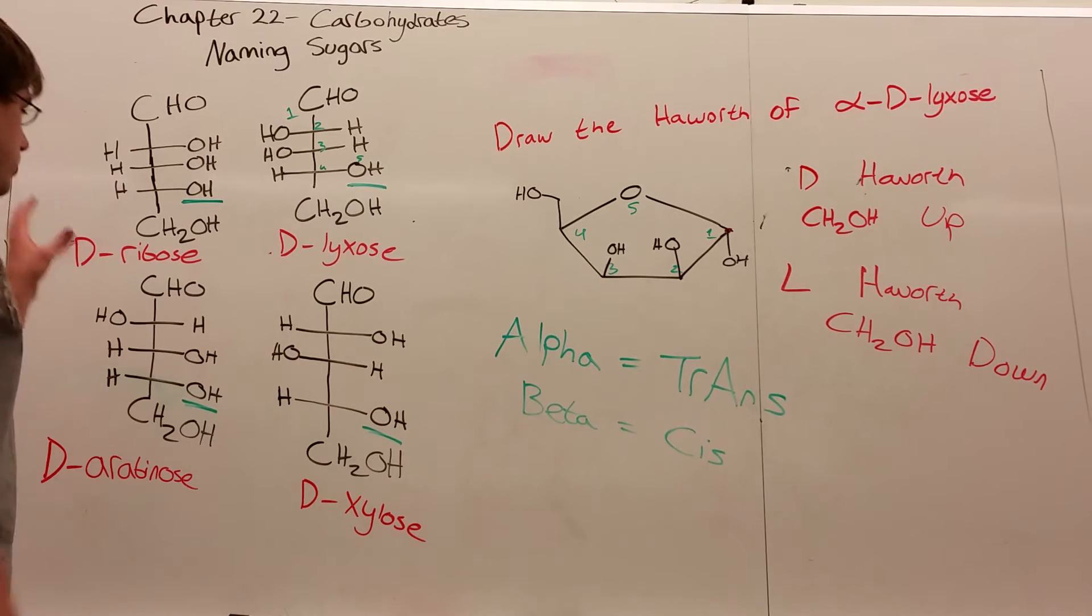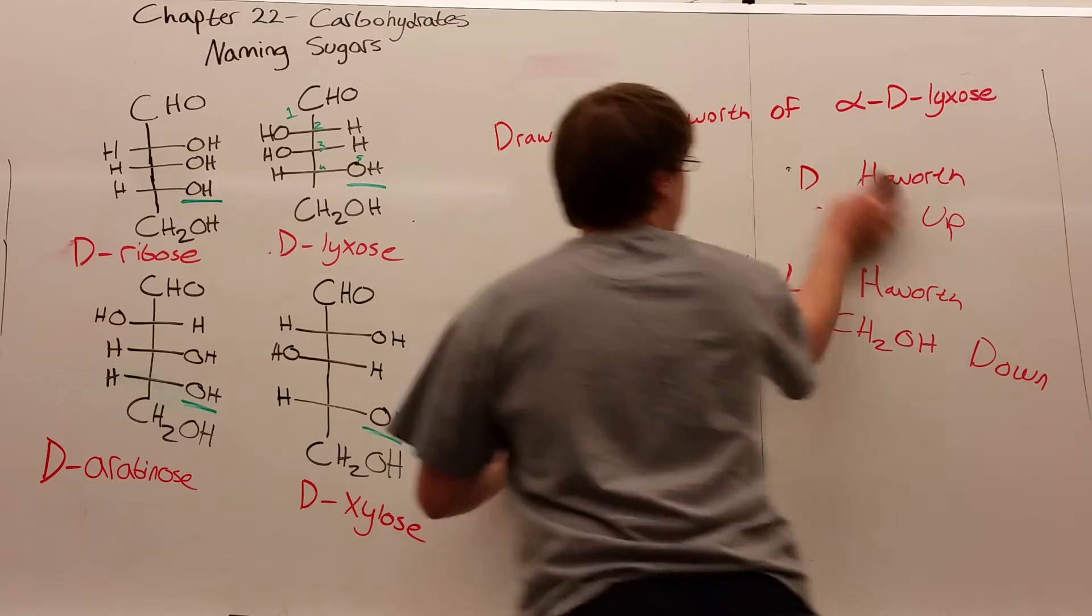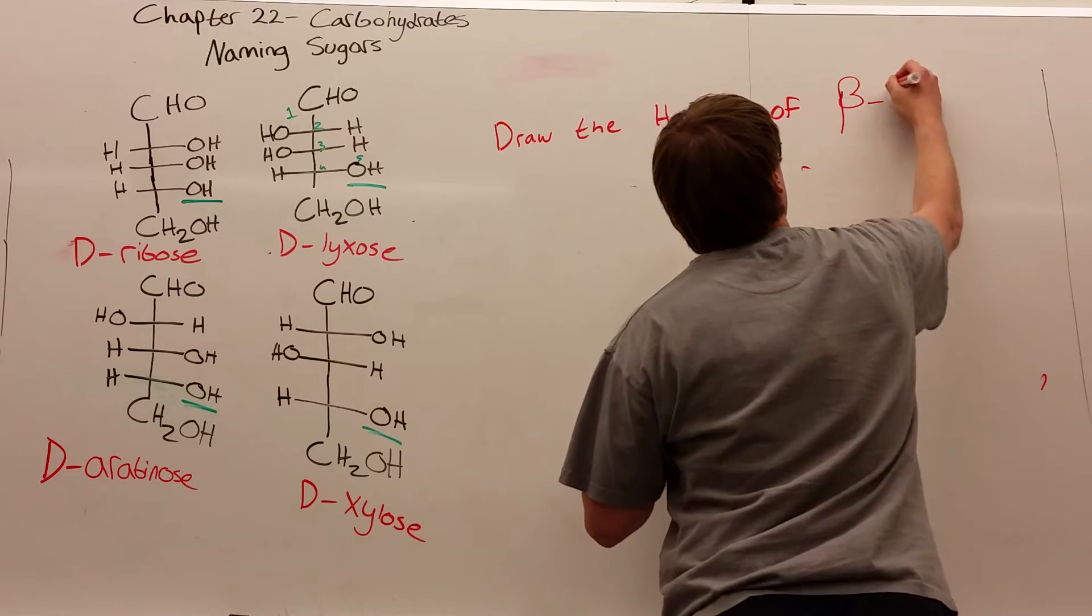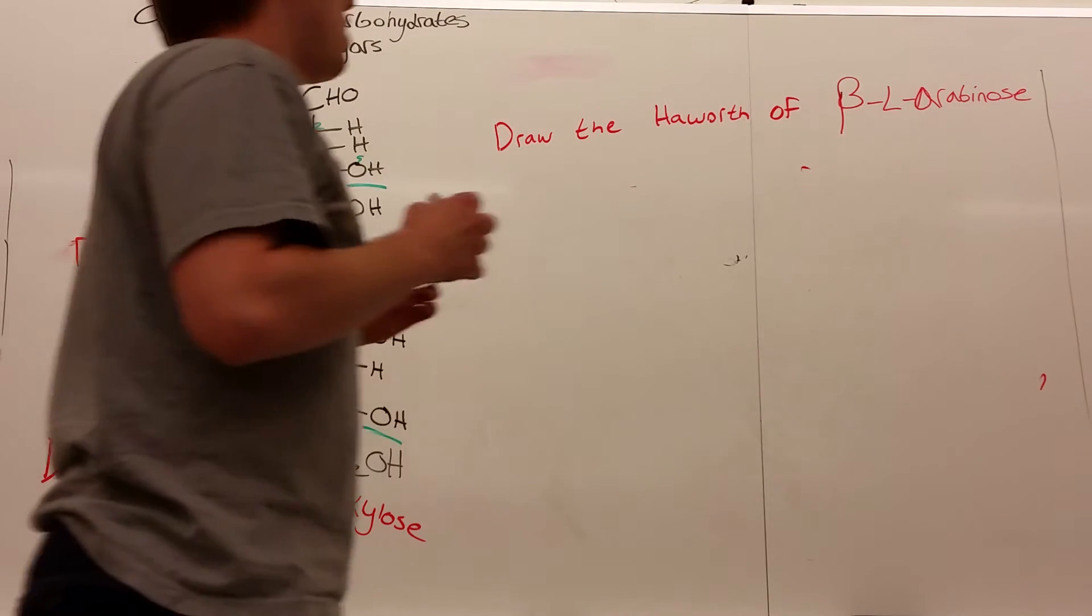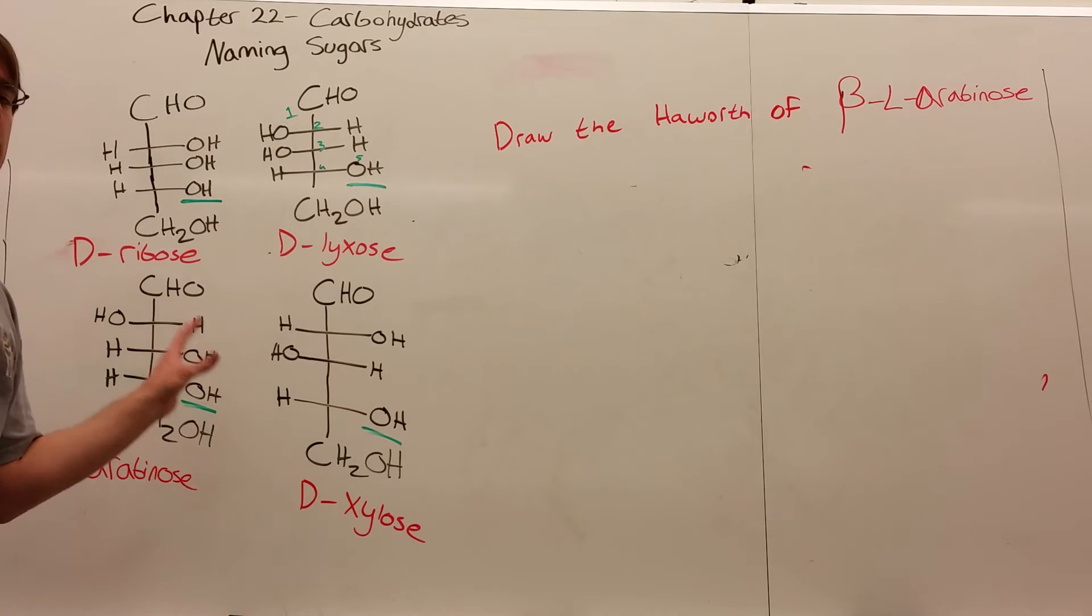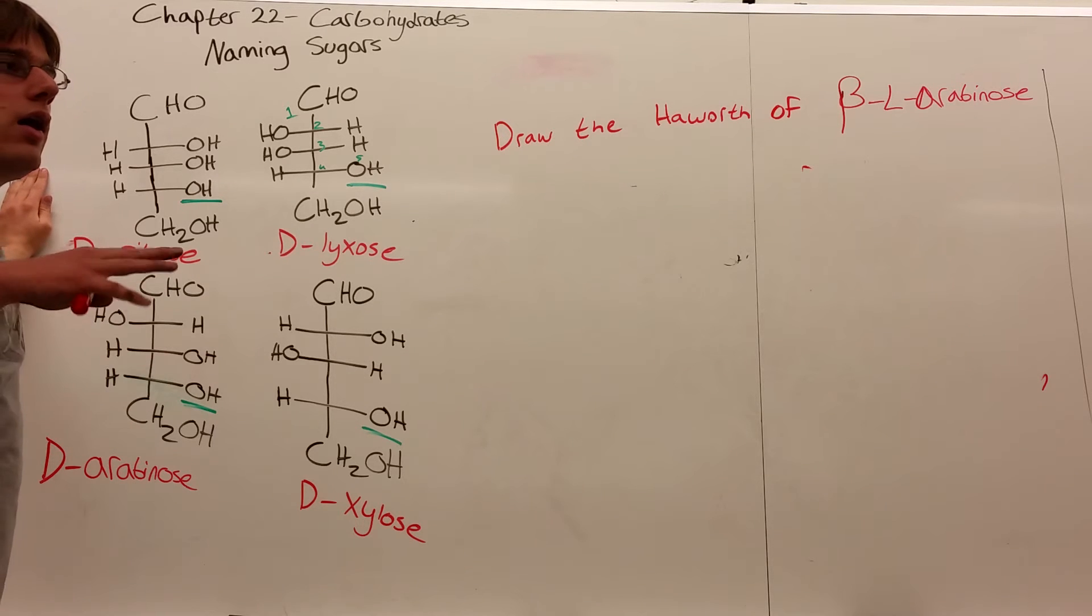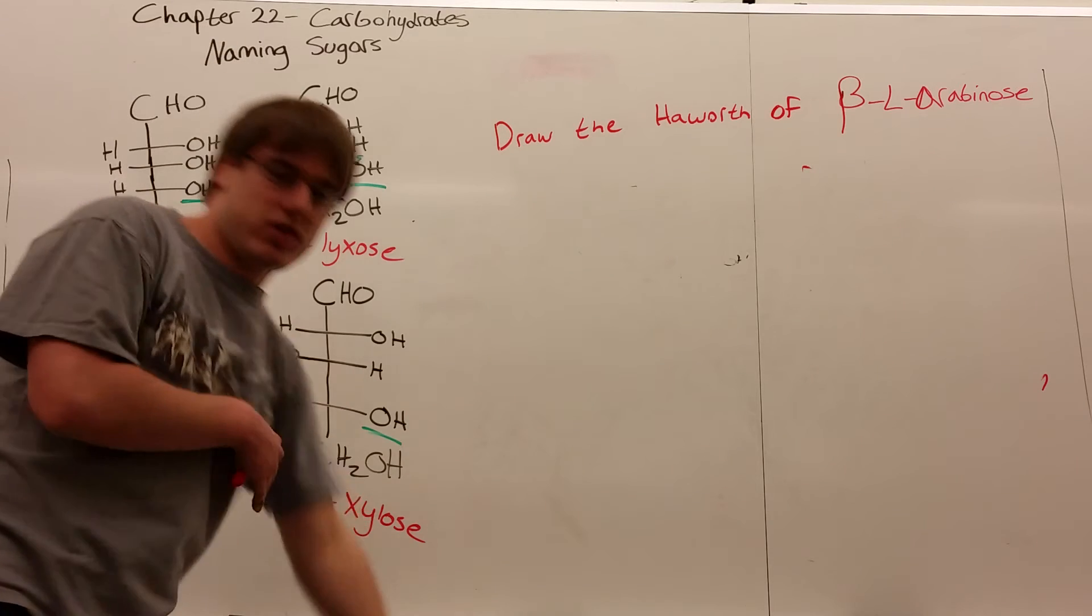Let's do another example. We need to draw the Haworth of beta-L-arabinose. Let's start by looking at what D-arabinose looks like. On your exam, if we have a question about naming, we'll always give you the relevant sugars. Here I drew aldopentoses. Sometimes you'll get hexoaldoses—six carbon chains. I chose pentoses because there are fewer and I could fit them on the board, but the process is the same.